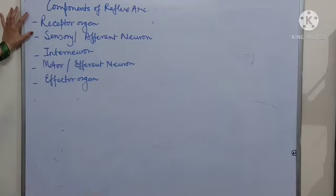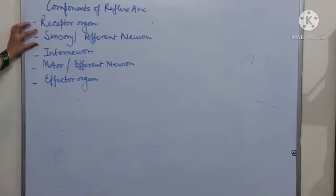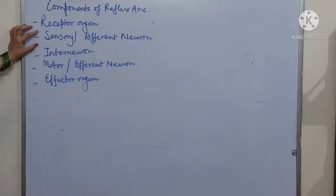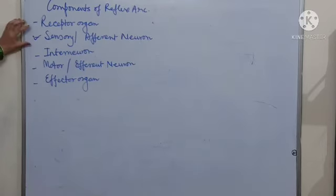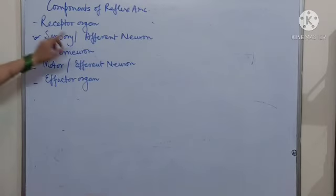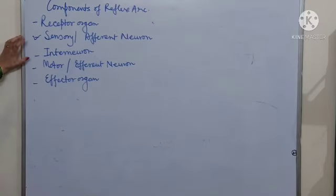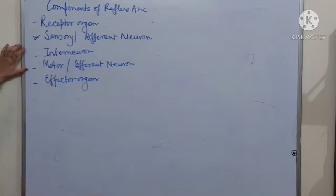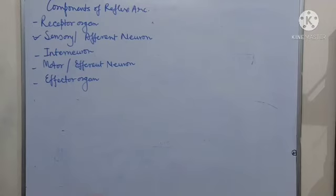The receptor organ — which may be your skin or any organ — receives the impulse. The sensory or afferent neuron carries that impulse to the brain or spinal cord. After reaching the brain or spinal cord, the efferent neuron takes the message to the effector organ. These are the components of the reflex arc.